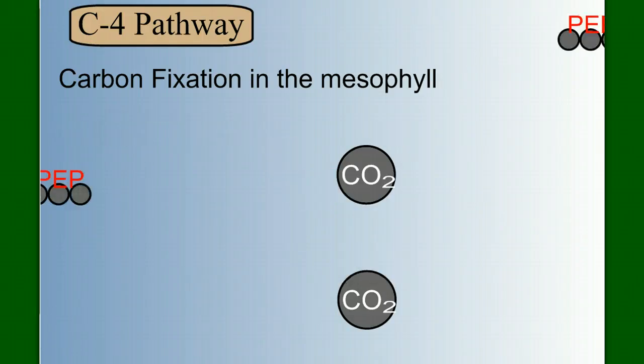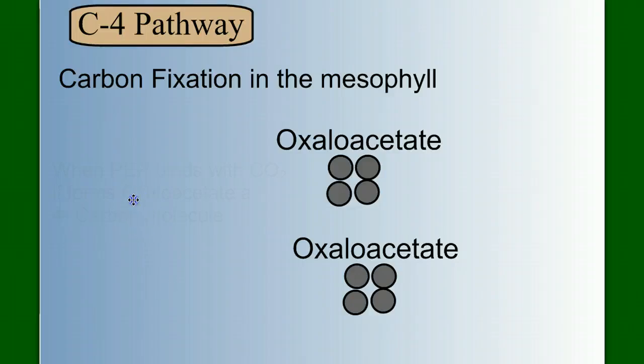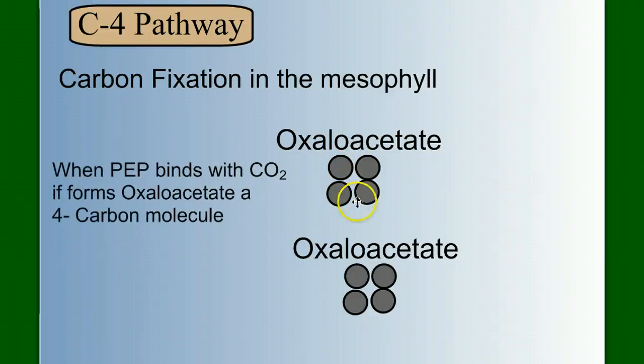So in the mesophyll cells, PEP will bind with carbon dioxide and convert to a molecule called oxaloacetate. Oxaloacetate is a four-carbon molecule, C4. The first intermediate made when we first fix carbon dioxide is a four-carbon molecule in the C4 pathway.